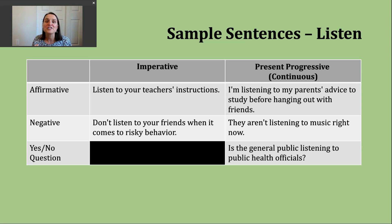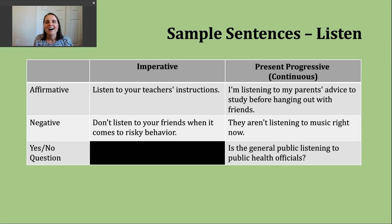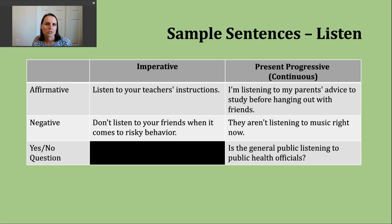That negative example might be a command you give a teenager — teens can be tempted with alcohol, drugs, smoking, or vaping. A parent might be saying don't take their advice and act on it. Before we move to the present progressive, note that we don't ask questions in the imperative — that's why you see the black box there.